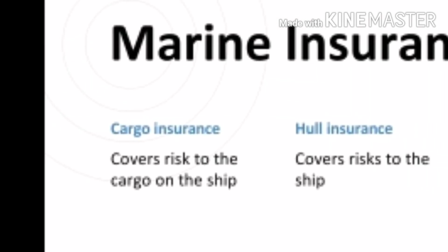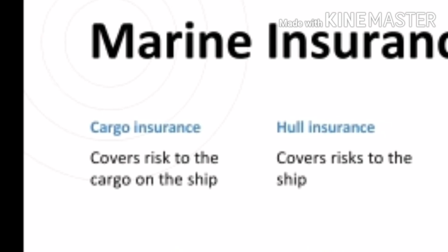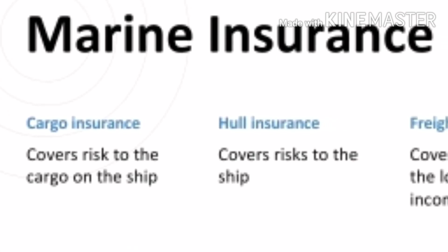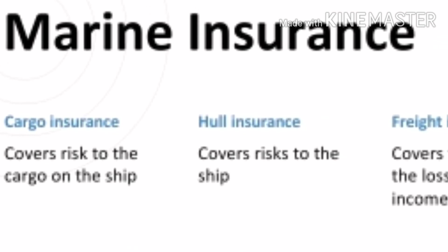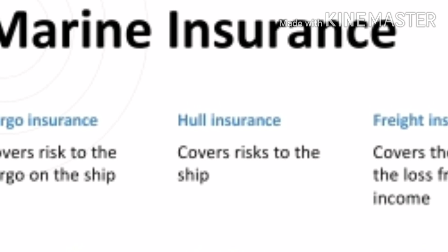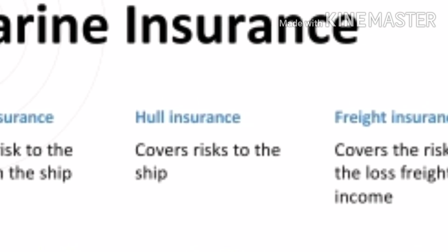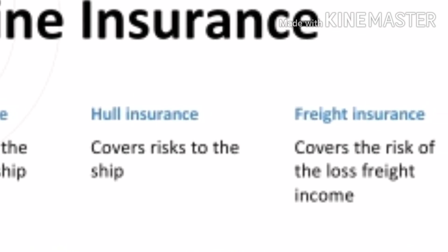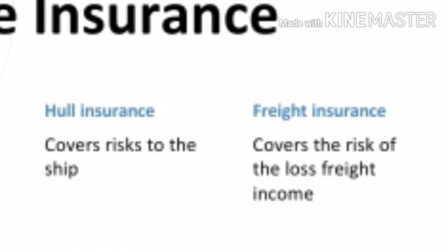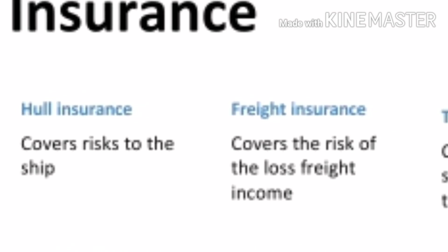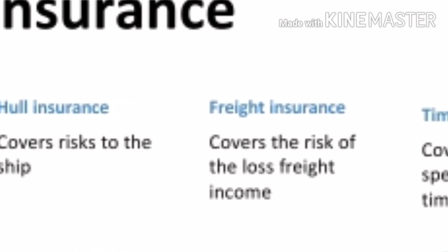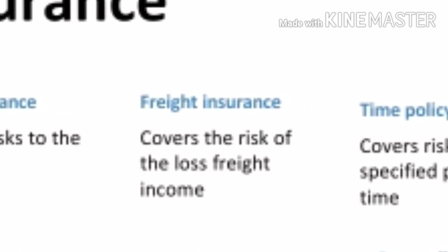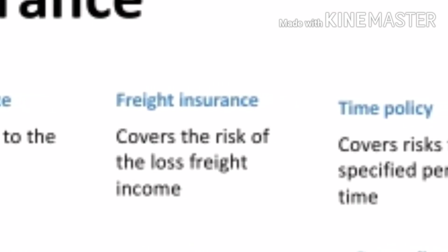Next we can discuss about different types of marine insurance policies. Broadly there are three types. First is cargo insurance — it covers the risk to the cargo on the ship due to accident. Second is hull insurance — it covers the risk to the ship itself. Third is freight insurance — it covers the risk of loss of the freight income.